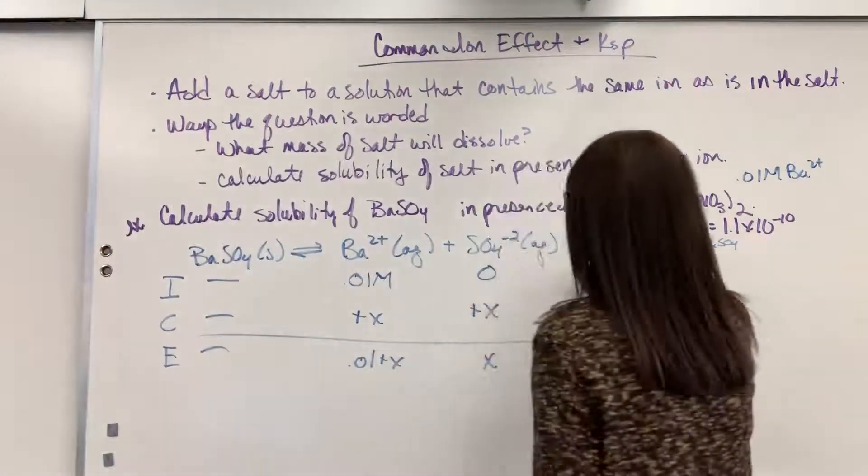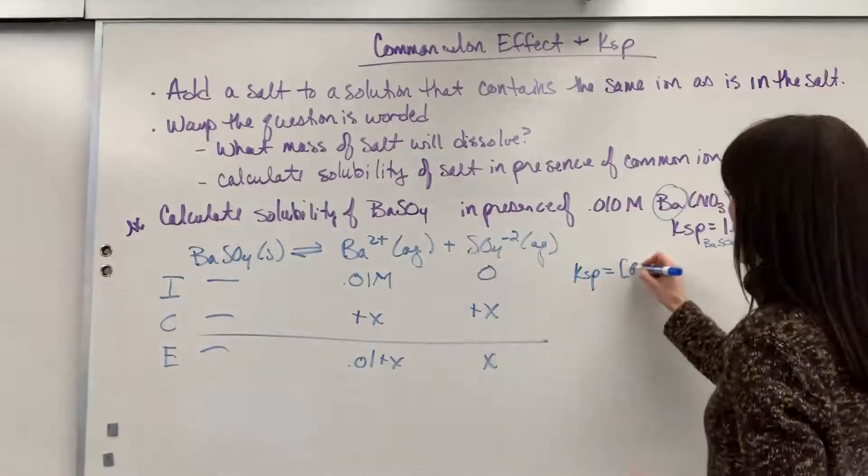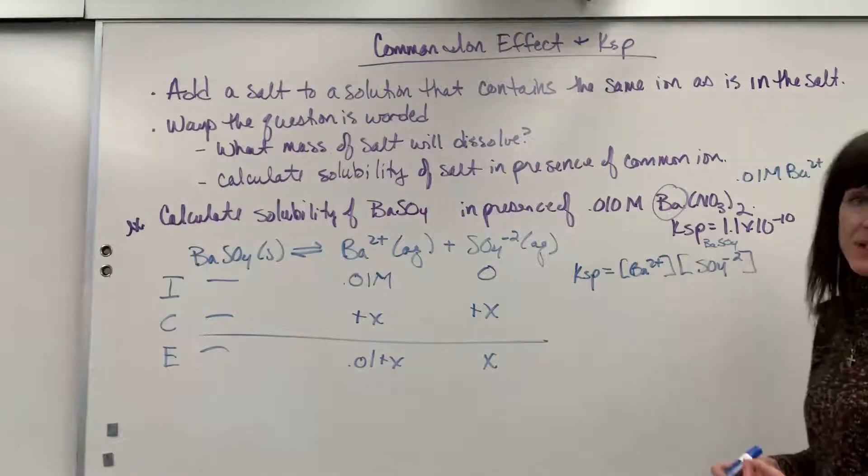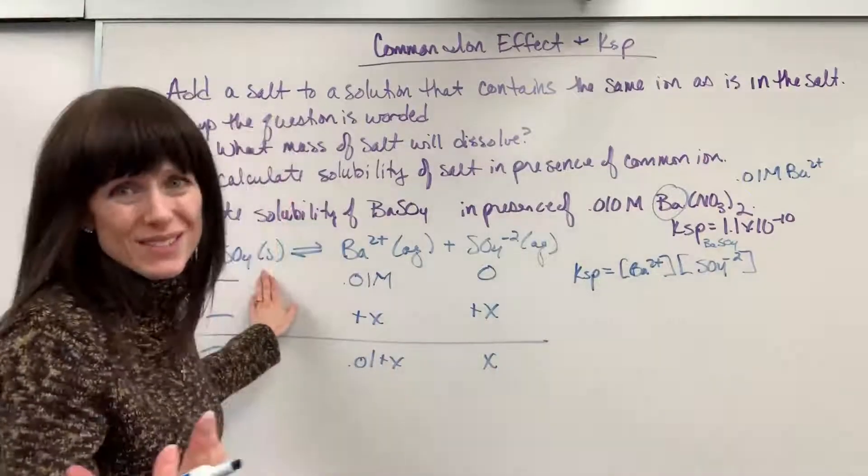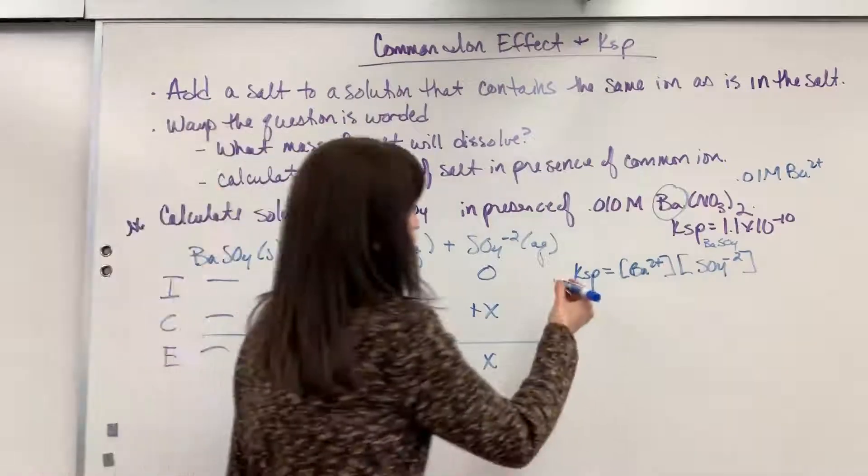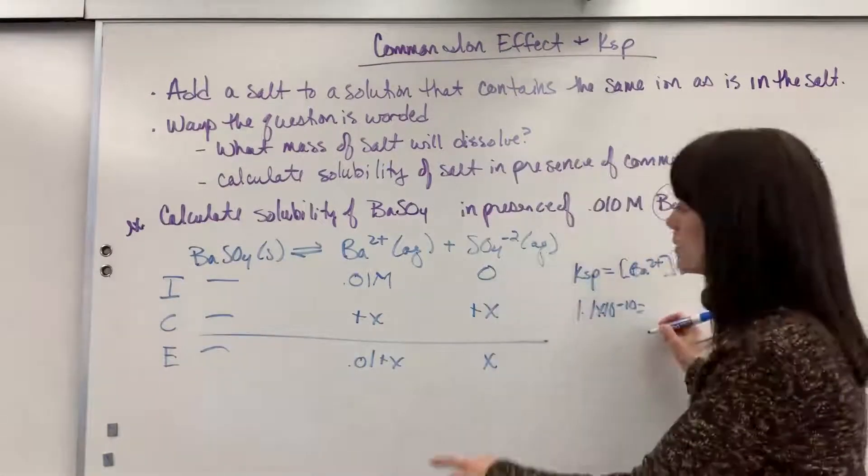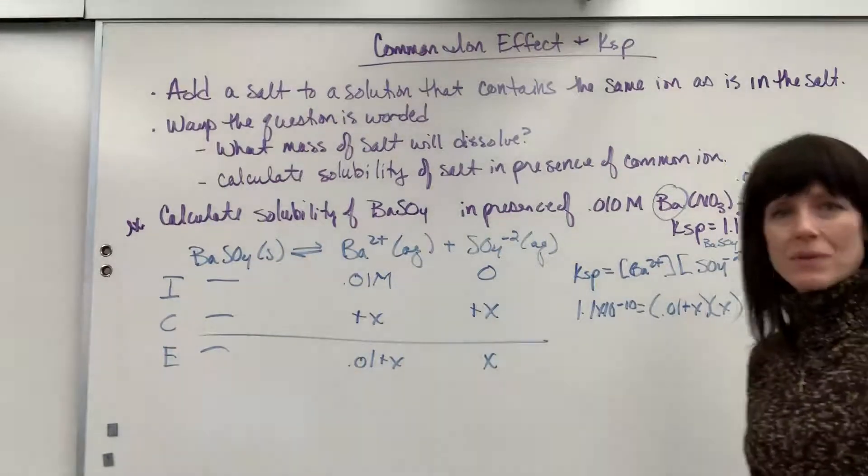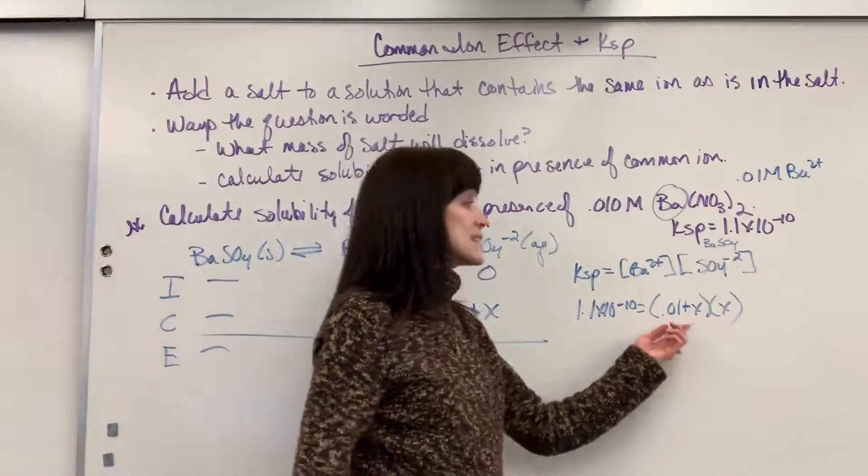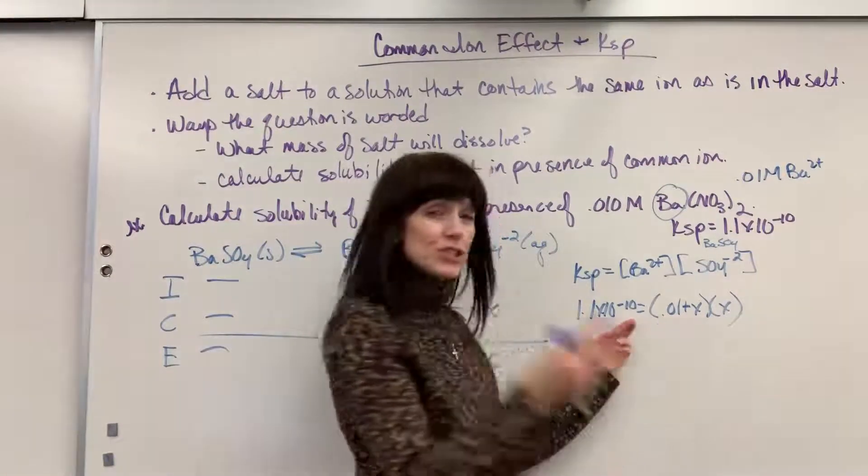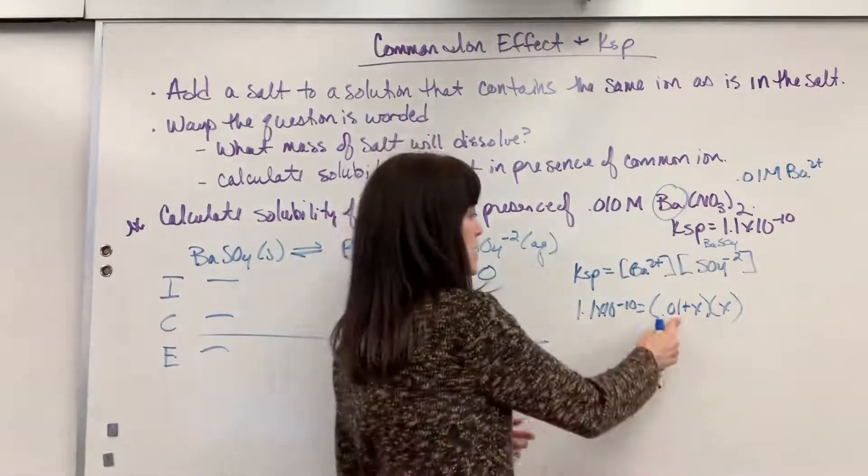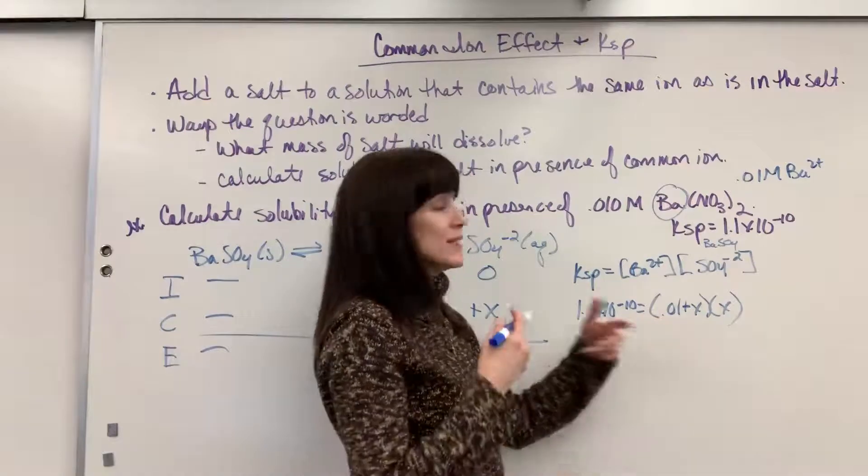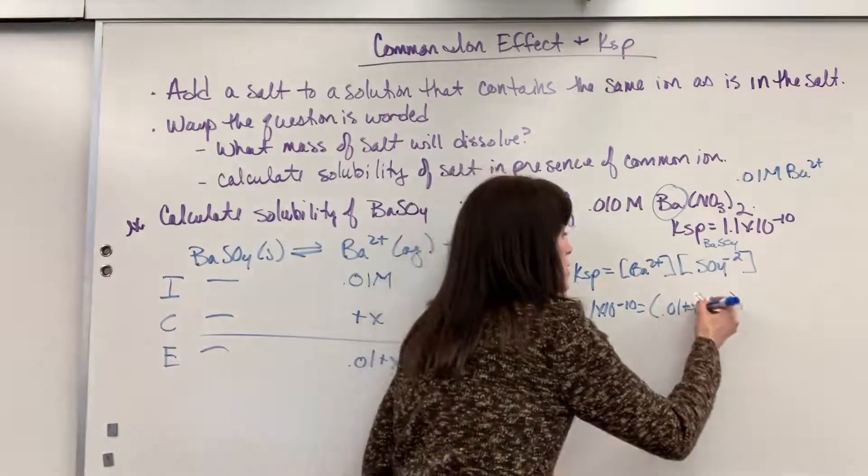So let's write your equilibrium expression. It will be Ksp equals the concentration of products, barium ion raised to the first power because it's a coefficient of 1, times the sulfate ion raised to the first power because it's the coefficient of 1, divided by reactants, but it's a solid, so we don't use that. Let's go ahead and plug in what we do have. Ksp is 1.1 times 10 to the minus 10 equals, okay, the barium is 0.01 plus X and the sulfate is X. Now, remember the tricks that we used with acid bases. When you have an X next to a concentration, if that concentration has at least two zeros difference, there's at least a hundred factor difference between the concentration and the Ksp, that X is negligible. The reason why is that X is going to be so small that when you subtract it from 0.01 and do sig figs, it's still just going to be 0.01. It'll be negligible. So you can take that out.